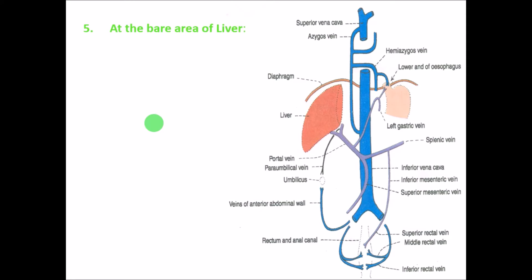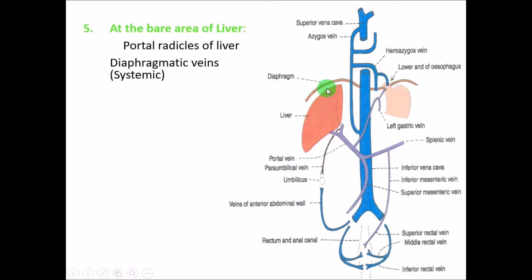The fifth site is at the bare area of the liver — the area not covered by peritoneum — where the portal radicals of the liver anastomose with the diaphragmatic veins, which are systemic.